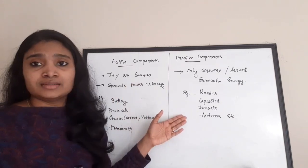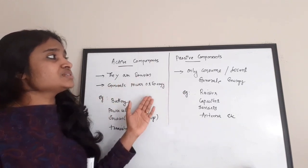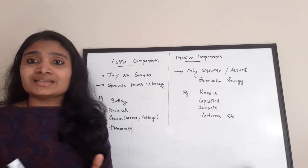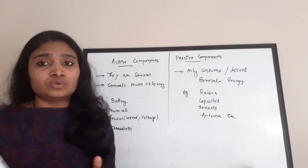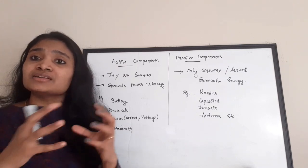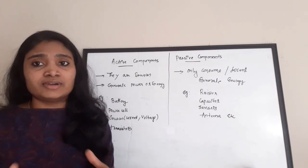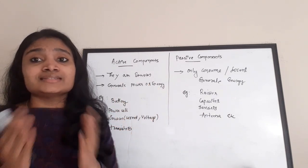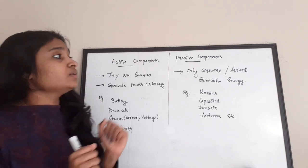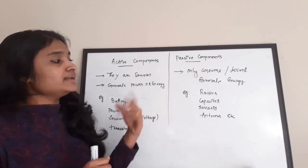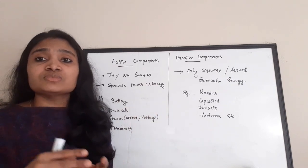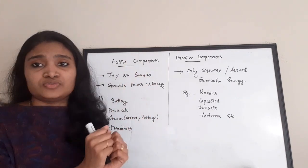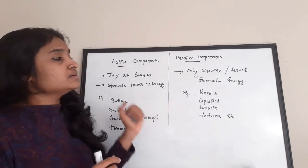Moving on to passive components — it is just the opposite of active components. They only consume; they don't generate any energy or power, they just consume it. For example, a resistor — does it generate any energy? No, it just blocks the flow of current, consumes some energy, and dissipates it in the form of heat while current passes through it. So a resistor is a passive component. Other examples include capacitors, sensors, and antennas — if you feed a source to the antenna, it just passes that as signals to the atmosphere.